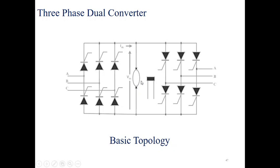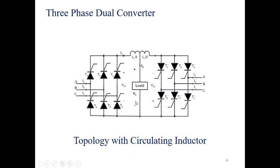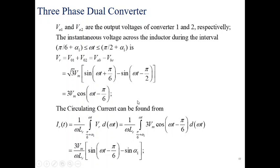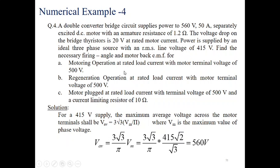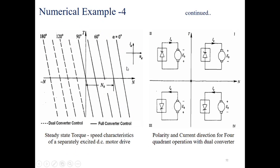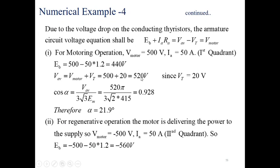The three-phase dual converter has two converters connected back-to-back with the load connected in between — this is the circulating-current type. It can operate in quadrant one, quadrant two, quadrant three, and quadrant four, because the dual converter can work in all four quadrants. Here is a numerical example based on this dual converter.